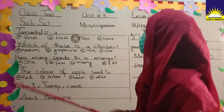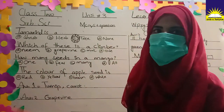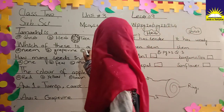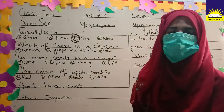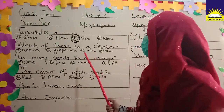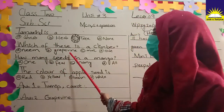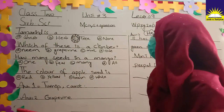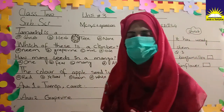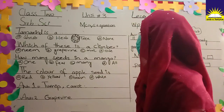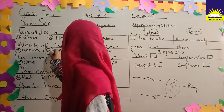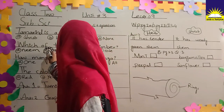Which of these is a climber? We discussed this in previous lectures. Climbers are plants that grow on other plants. Which one is a climber? Grape vine — we have also read that grape vine grows on other plants, or on a wall or something else. So grape vine is the right option.